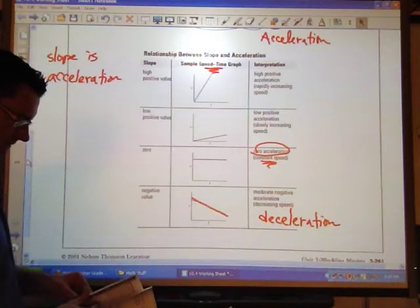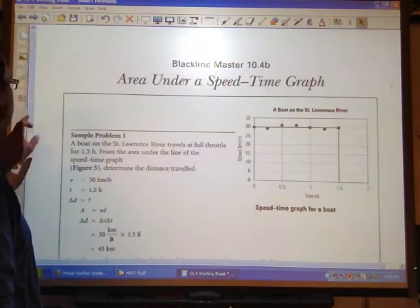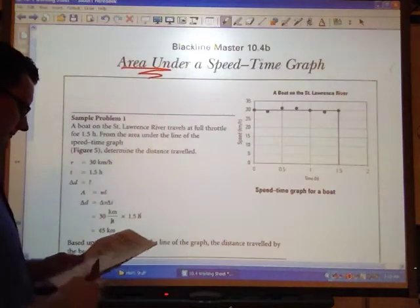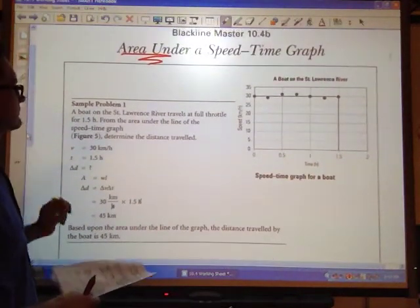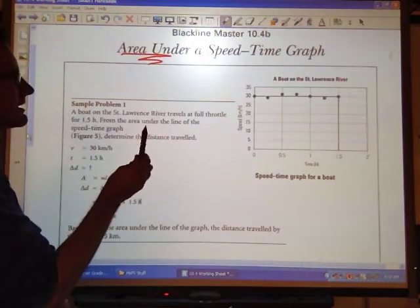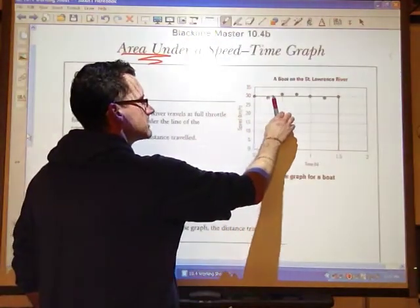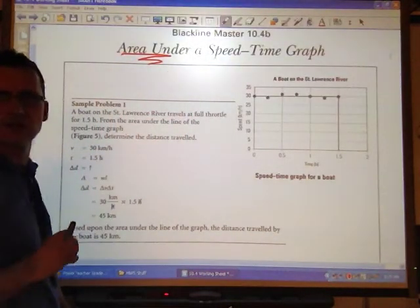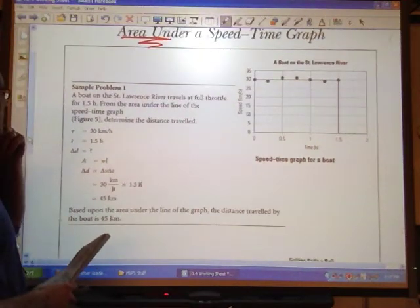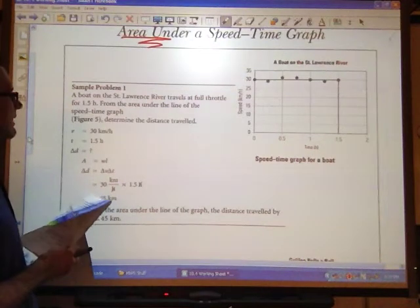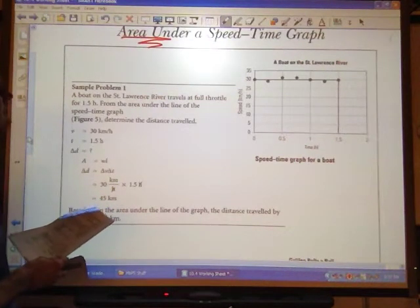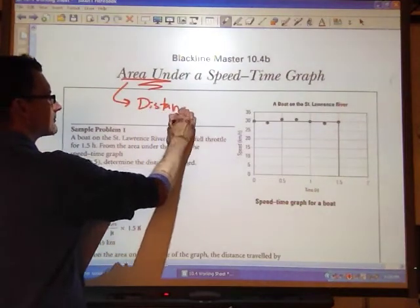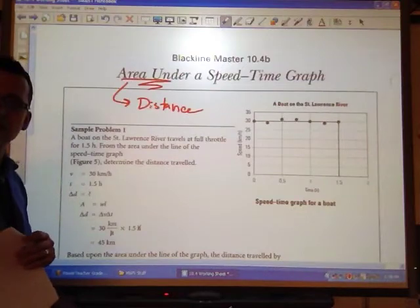If we go into the next page, a speed-time graph also gives us something else. If we look at specifically the area under the speed-time graph. So if we take a look here, we have this graph, a boat on the St. Lawrence River. We can see it's going at a constant speed of 30 kilometers per hour for a total time of 1.5 hours.